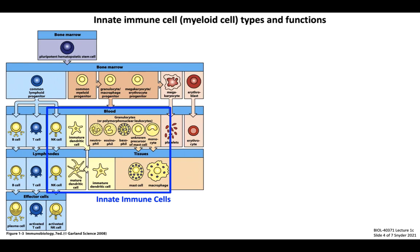As a quick side note, NK cells are actually derived from the lymphoid lineage, but due to their effector functions are often categorized as a type of innate immune cell, despite technically not being myeloid cells. Let's begin by categorizing innate immune cell types according to how they relate to the different functions or objectives of the innate immune response.